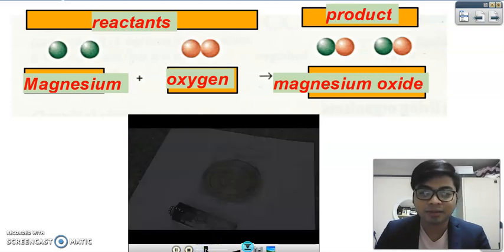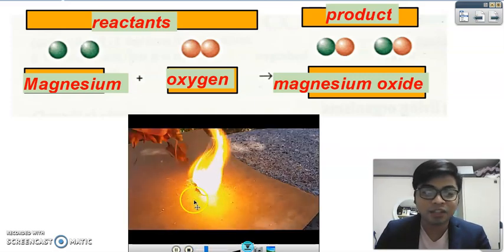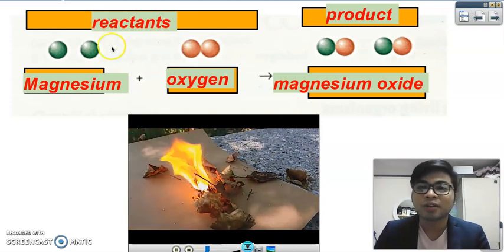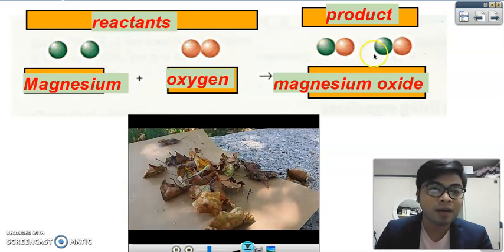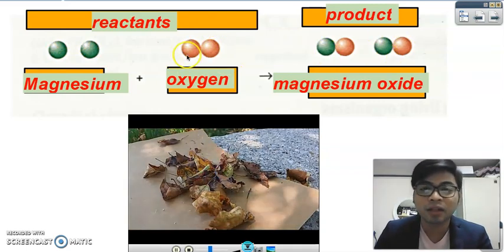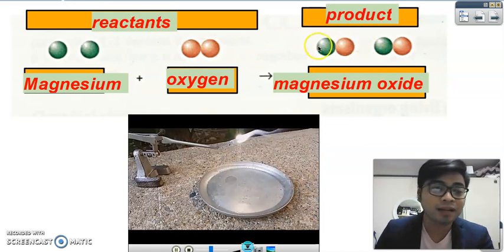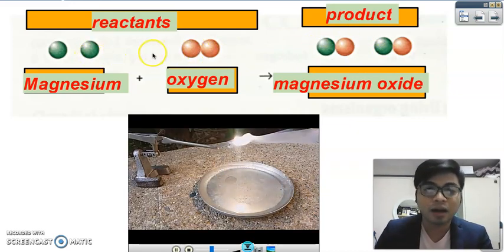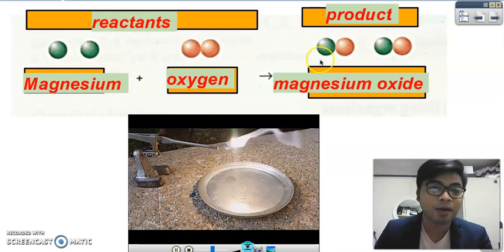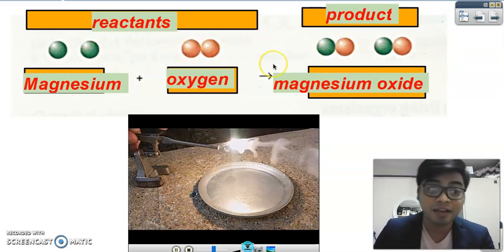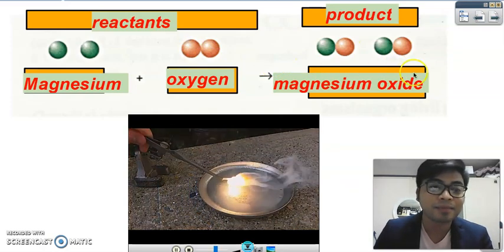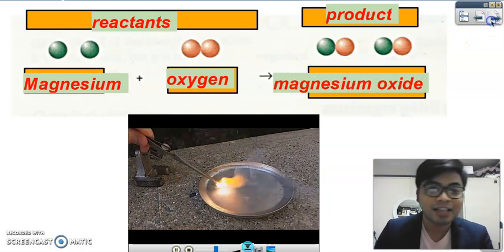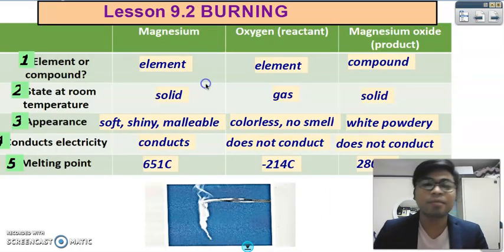Here is the magnesium ribbon being burned. The reactants are magnesium plus oxygen, and they form the product magnesium oxide. The atoms of magnesium react with oxygen, and the product looks totally different from the reactants — therefore we call this a chemical change, a chemical reaction.